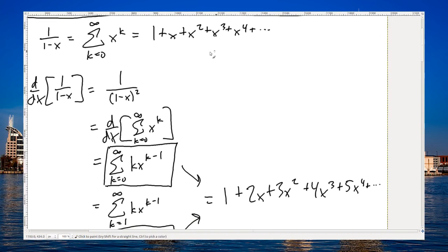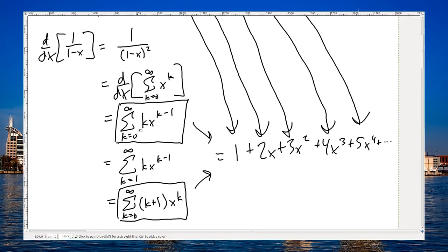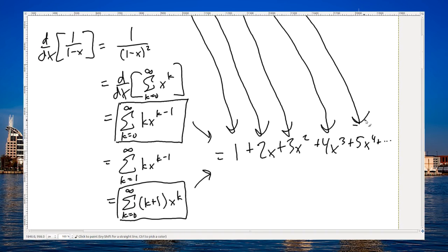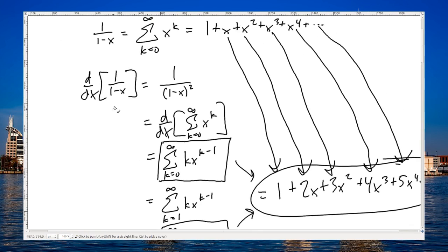Of course, that makes sense because 1 went away to 0, x became 1, x squared became 2x, x cubed became 3x squared, x to the 4th became that, x to the 5th became that, so on and so forth. So there is my first few terms of this convergent Maclaurin series.